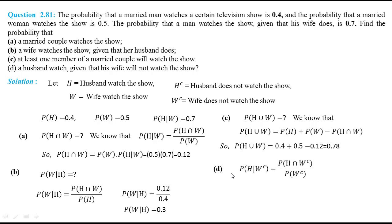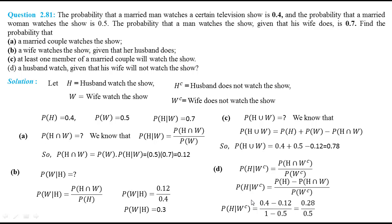Part D: the probability that the husband watched the show given that his wife will not watch the show. Probability of H given W complement equals probability of H intersection W complement over probability of W complement. From the properties of probabilities, probability of H intersection W complement equals probability of H minus probability of H intersection W. After substituting the relevant probabilities, we have probability of H given W complement equal to 0.56.